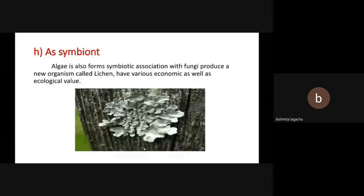We use algae as symbionts. Algae also form symbiotic associations with fungi to produce a new organism called lichen. Algae are also called Chlorophyta and Cyanophyta. Chlorophyta means green algae and Cyanophyta means blue-green algae.